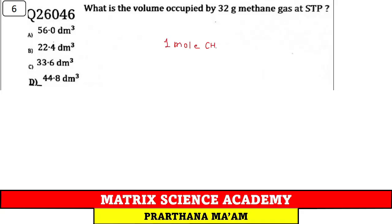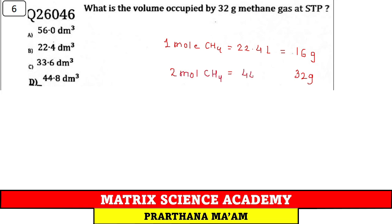Question 6: What is the volume occupied by 32 g of methane gas? 1 mole methane = 16 g = 22.4 L. 32 g = 2 moles = 44.8 L. Option D.